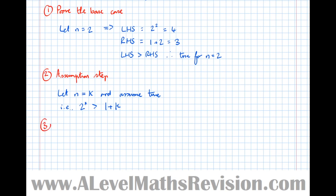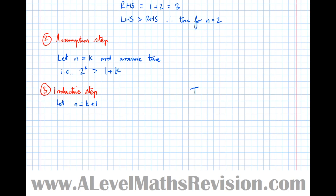Step three is the inductive step: prove that if it's true for k then it's true for k plus 1. Let n equal k plus 1. As with other types of proof by induction, we should write our target expression down. Our target for the k plus 1th term is 2 to the k plus 1 greater than 1 plus k plus 1, which simplifies to k plus 2.